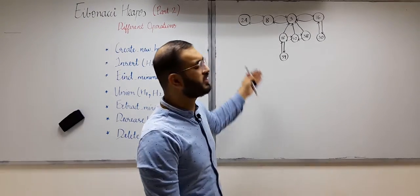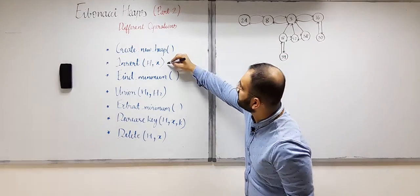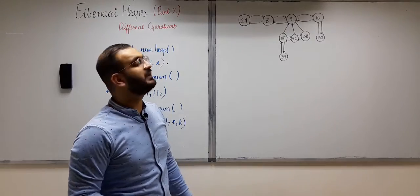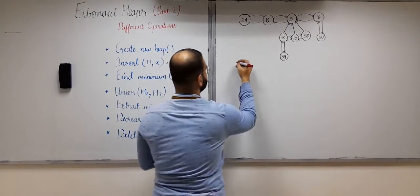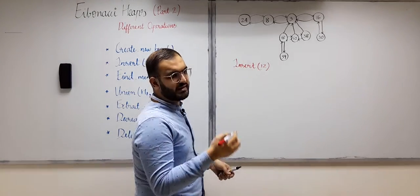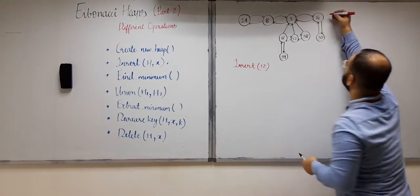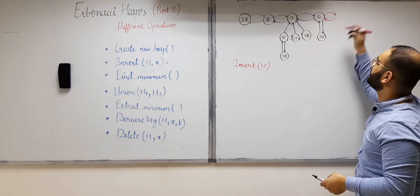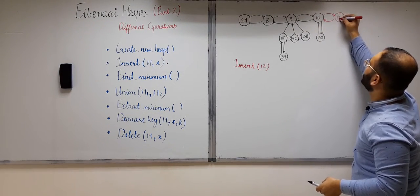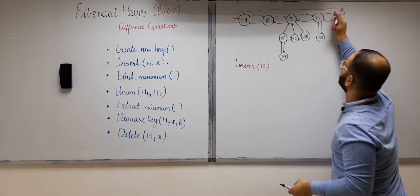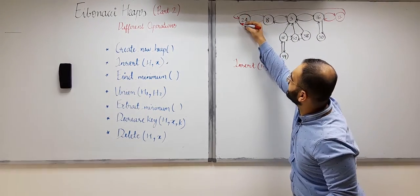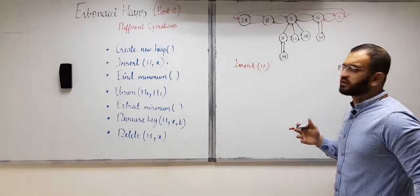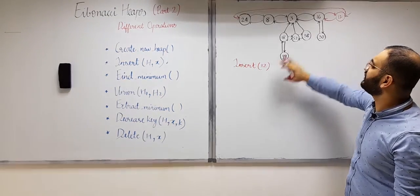Here I have drawn a Fibonacci heap to demonstrate the different operations. Suppose I want to insert an element with value x — say, 12 — into this Fibonacci heap. All I have to do is add 12 to the root list. This first row of the Fibonacci heap is known as the root list. I'll just add 12 to the root list and change some of the pointers. The pointer that was starting from one node will now point to the new node, and the adjacent pointer will be updated as well. We just need to change some links to insert 12 into the root list.